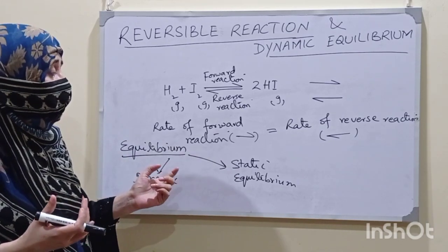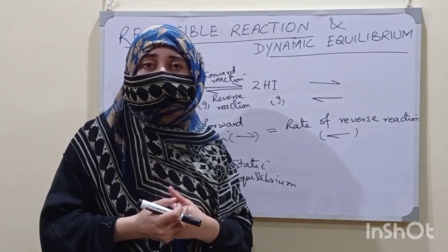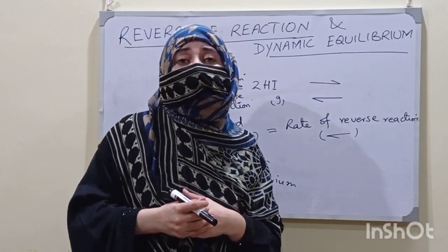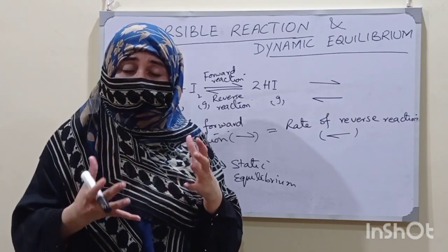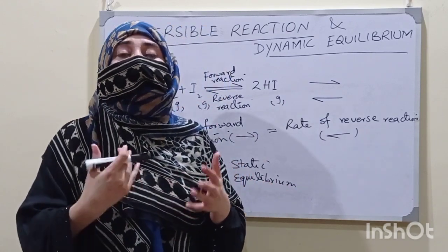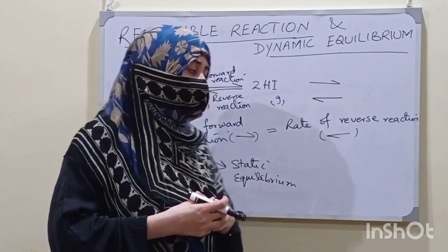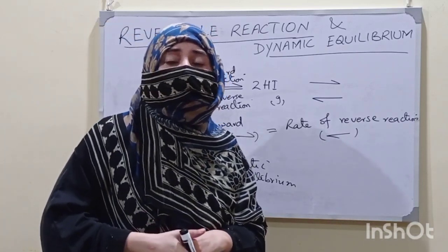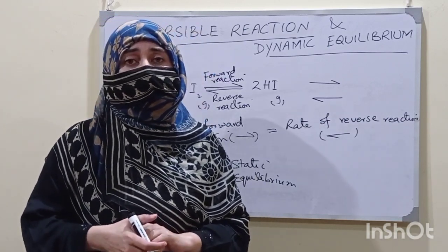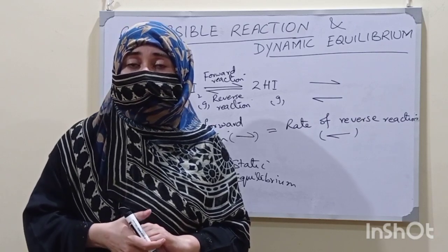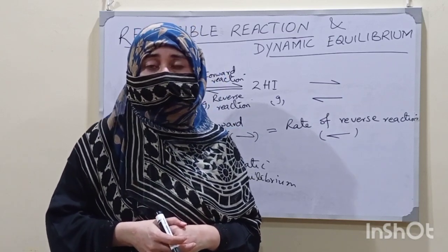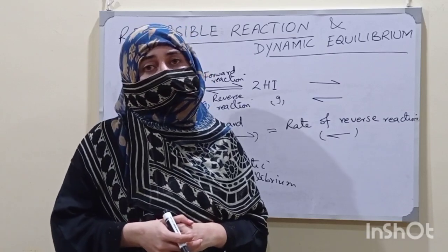Dynamic equilibrium is attained when specific conditions of temperature and pressure are applied. When there is a change in temperature and pressure, we can change the concentrations of reactants and products — the reaction moves forward or backward and ultimately we will attain equilibrium again. In the next class, we will discuss the macroscopic characteristics of forward and reverse reactions and dynamic equilibrium. If you feel any problems, you can drop the question in the comment box. See you in the next video, inshallah.